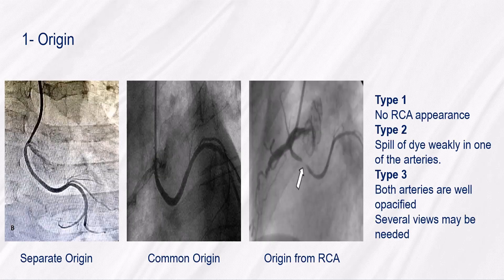How to describe a normal CX from RCA or right coronary sinus? Regarding the origin: if there is no appearance of the RCA, it is considered Type 1. If there is spilling of dye weakly in one of the arteries, it is considered Type 2. While in Type 3, both arteries are well opacified. Several views may be needed.